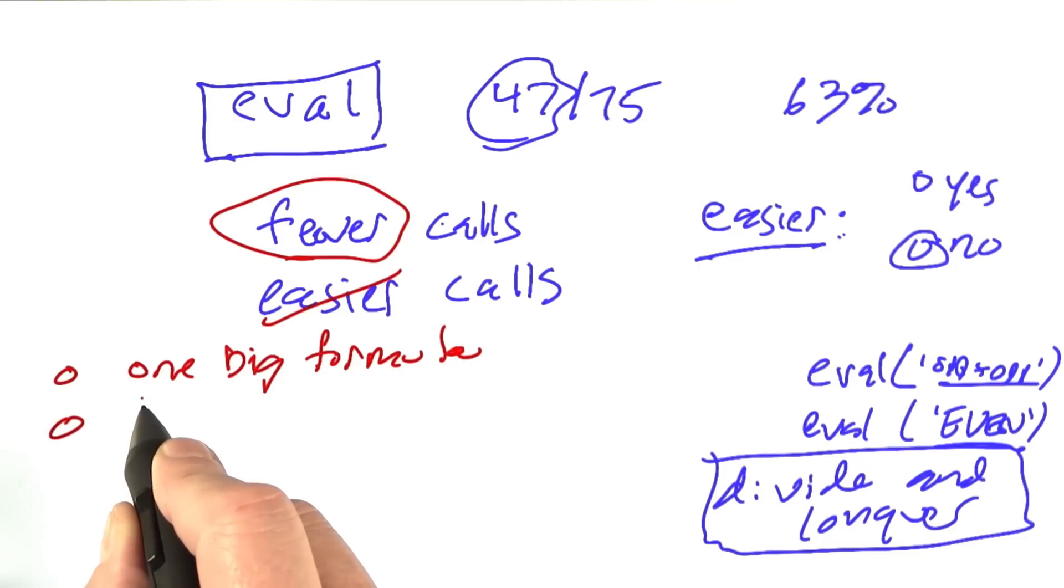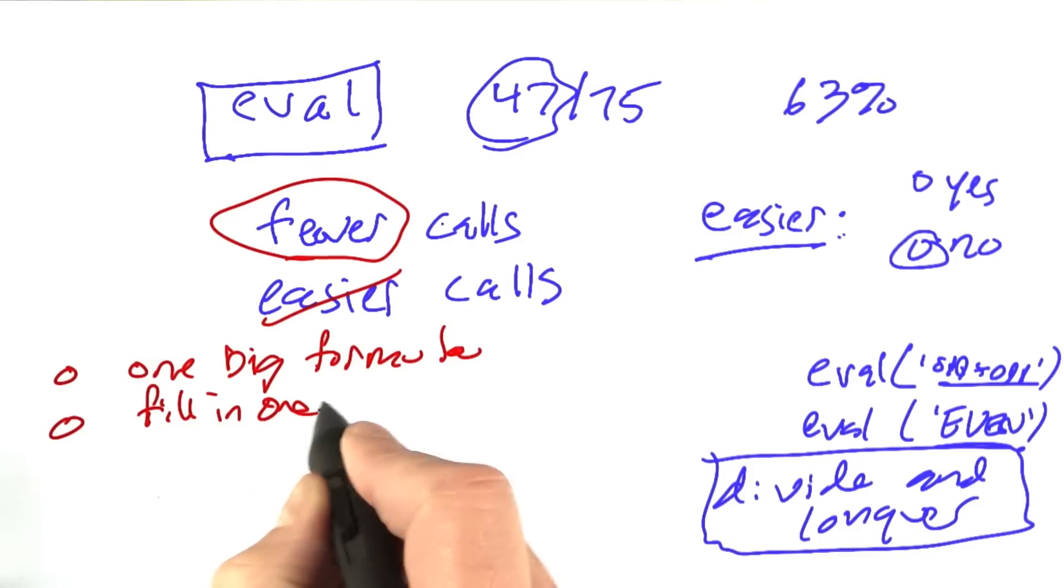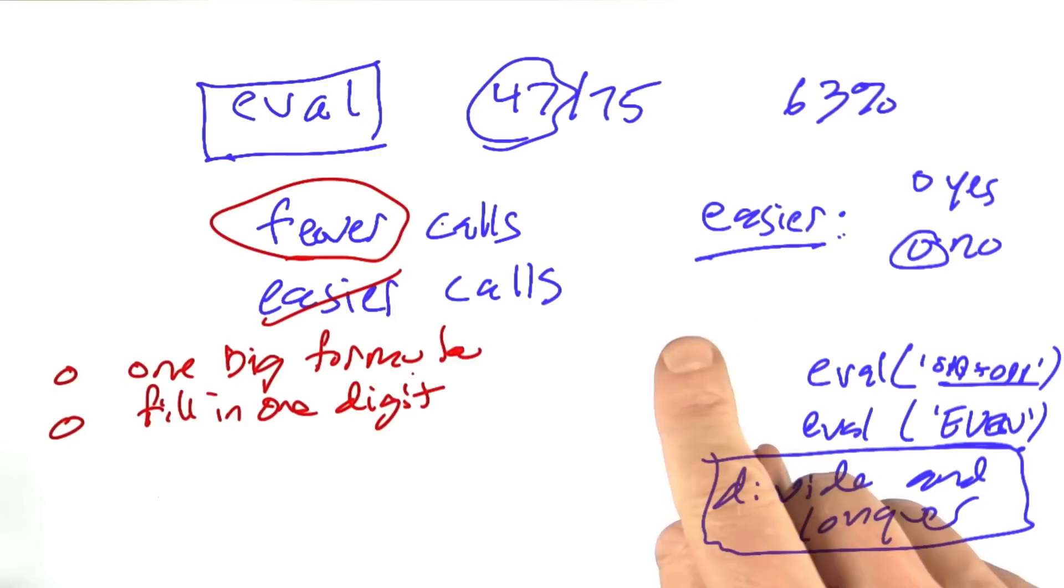Another way might be to say, could we figure out a way to fill in one digit at a time? Rather than do all n factorial permutations of digits, if we could do one digit, see if that works, and if it does, then do the next digit.